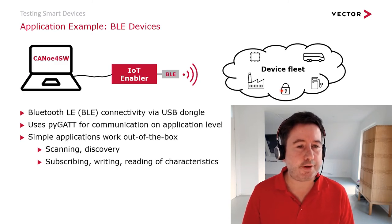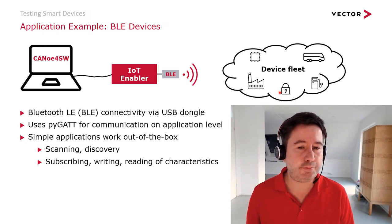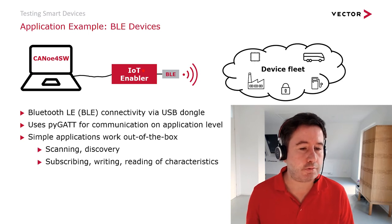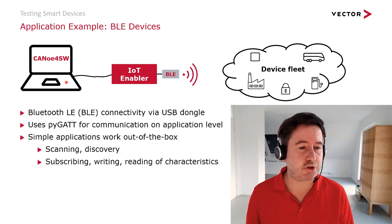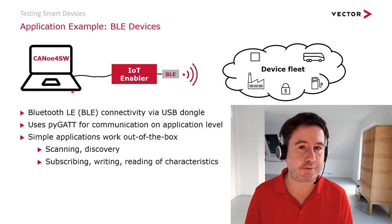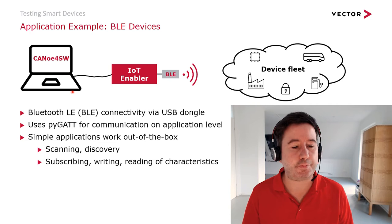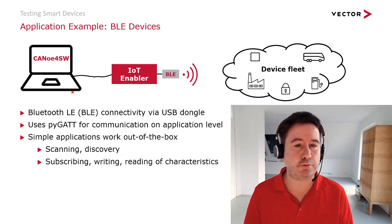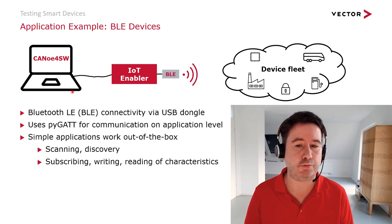One application example is BLE. If you want to use BLE, you attach a normal BLE dongle to the IoT Enabler, and there is already an API available in Canoo for software. This lets you perform simple operations like scanning for available devices, discovering the characteristics of the device, subscribing to characteristics to receive sensor values, and reading or writing characteristics.